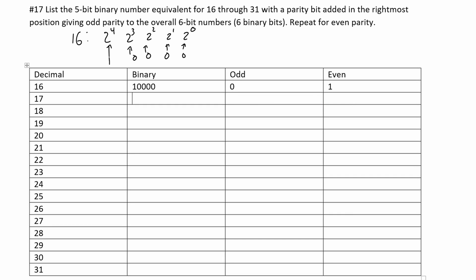For 17, which is 16 plus 1, the binary is just going to be 1 0 0 0 1, because the 2 to the 0th position is 1. We can see that we have two ones in here, meaning we have an even number of ones, so we're going to have a 1 in our odd parity and a 0 in our even parity.